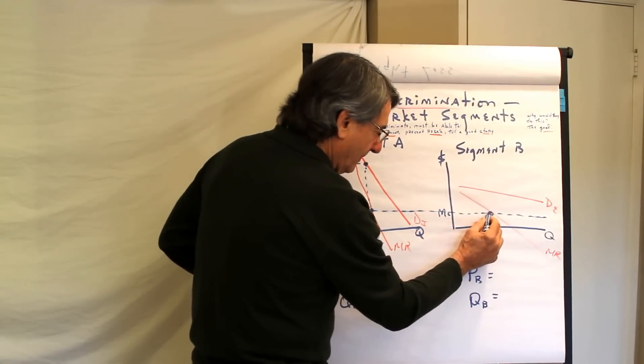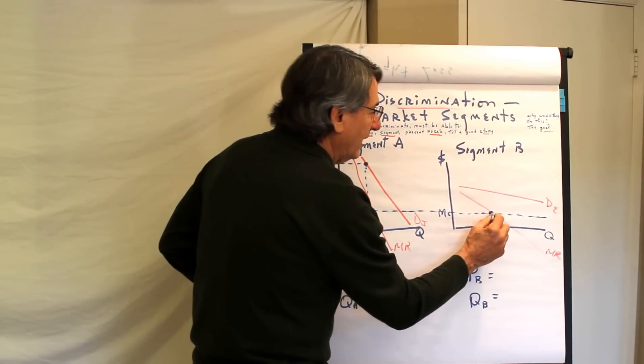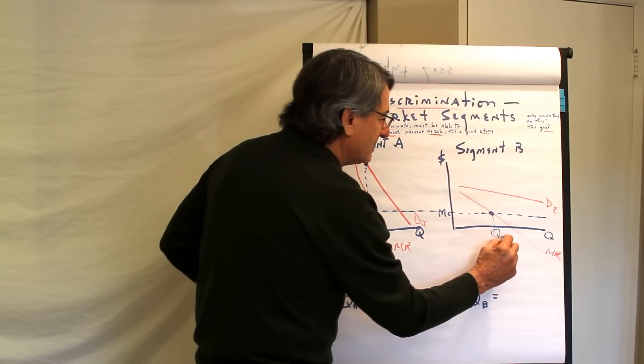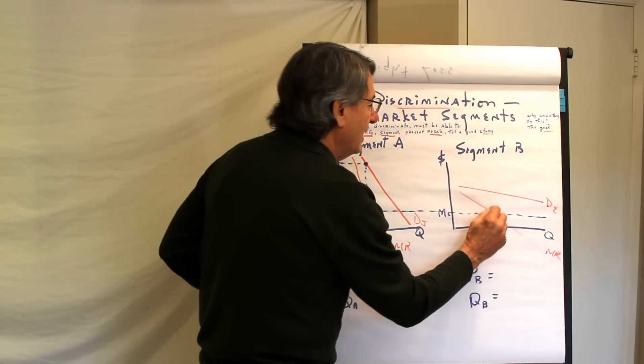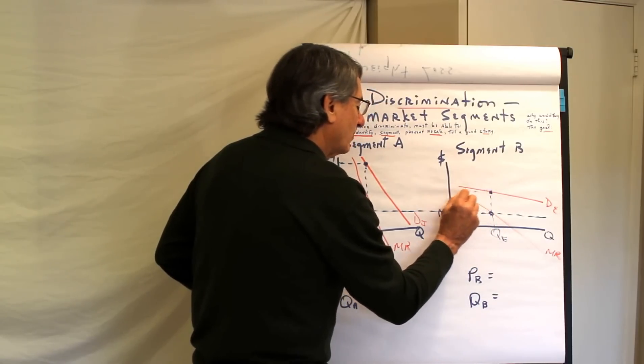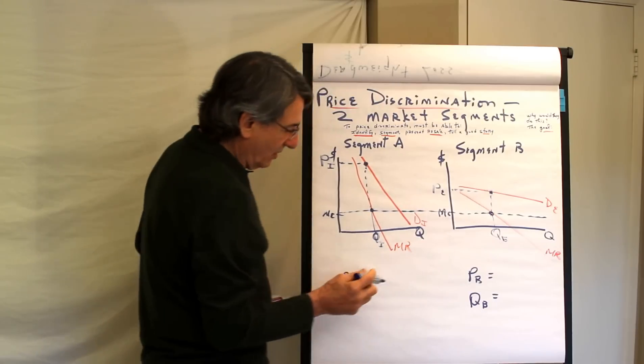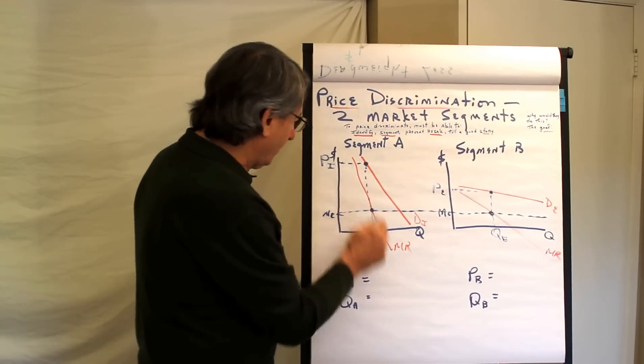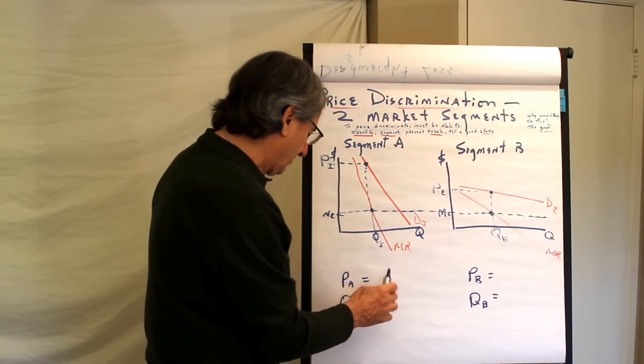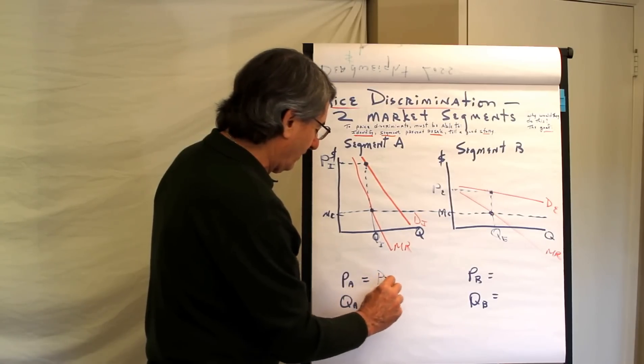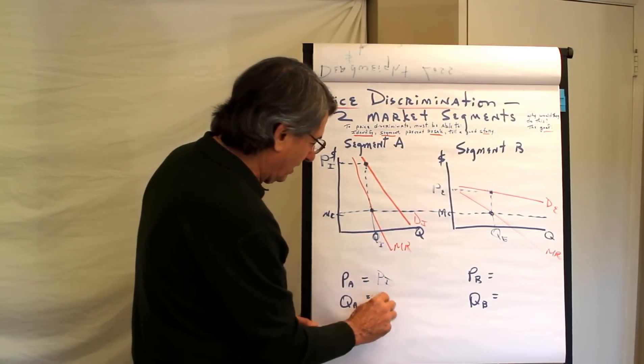And for the elastic group, the vacation travelers, then this is the quantity of vacation tickets they would want to sell. This is the elastic group. And this is the price they would charge them. There's the price for the elastic group. So, in this case, the price for this group, segment A, business travelers, will be P sub i for inelastic and the quantity will be Q i.